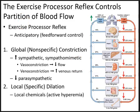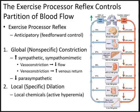When we exercise, there will be an increase in sympathetic activity and the release of sympathomimetic hormones, causing vasoconstriction and venoconstriction. This increases venous return. A global venoconstriction increases blood flow to the heart. Eventually there is also local or specific dilation due to an increase in metabolites from exercise — local chemicals that cause active hyperemia.